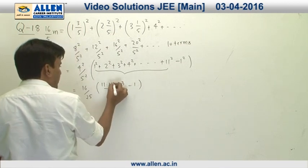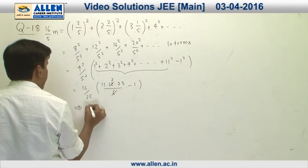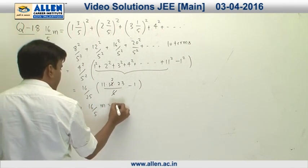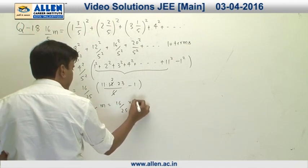So this is going to be 2 times, and this is 16 upon 5m equals 16 upon 25 into 505.